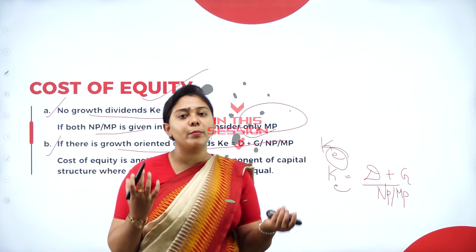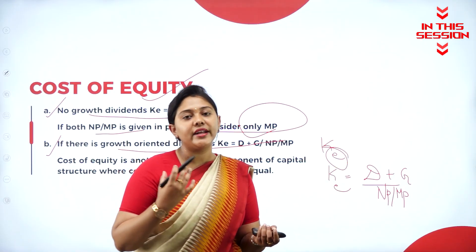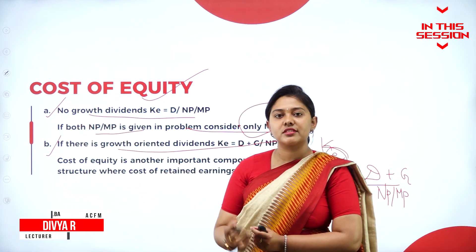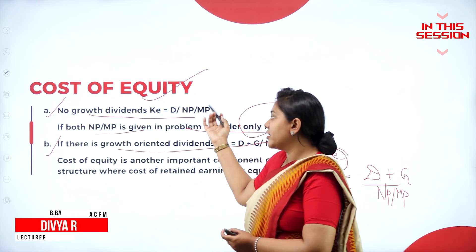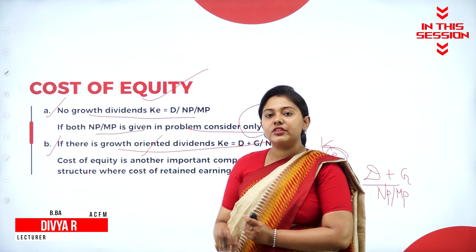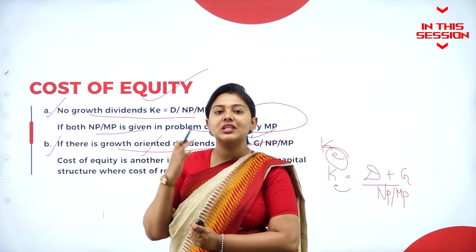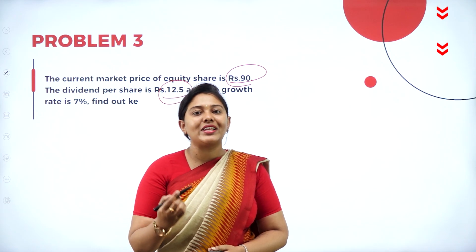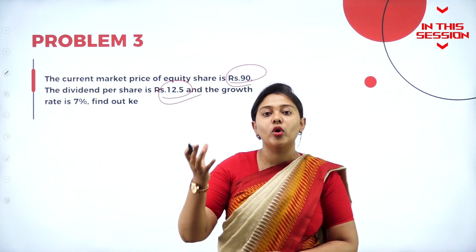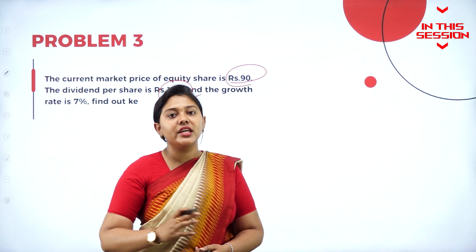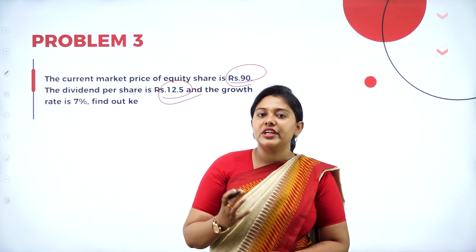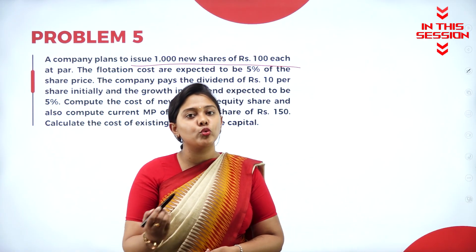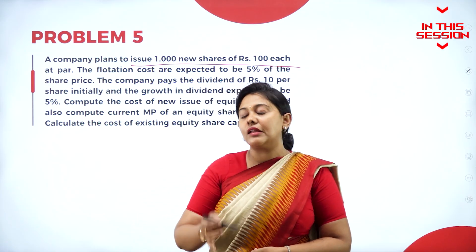Depending upon the problem and the situation, there are two conditions: no growth oriented dividend and growth oriented dividend. Based on these two situations, the formula differs. Whatever is given in the question has to be converted into decimal. Percentage — everything we are converting into decimal. The issuing cost depends on whether it is issued at par.